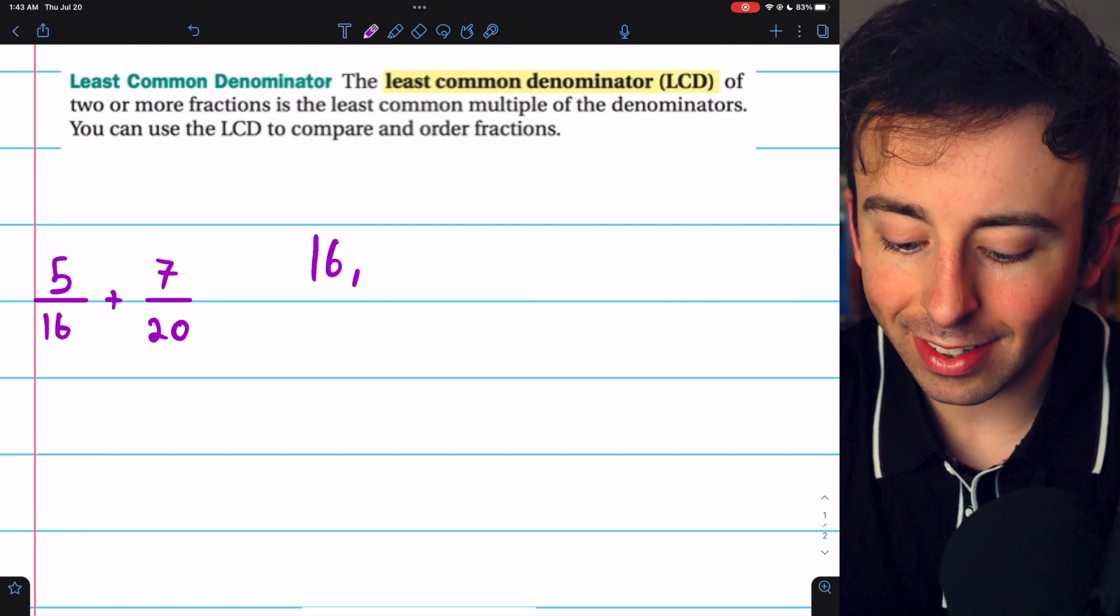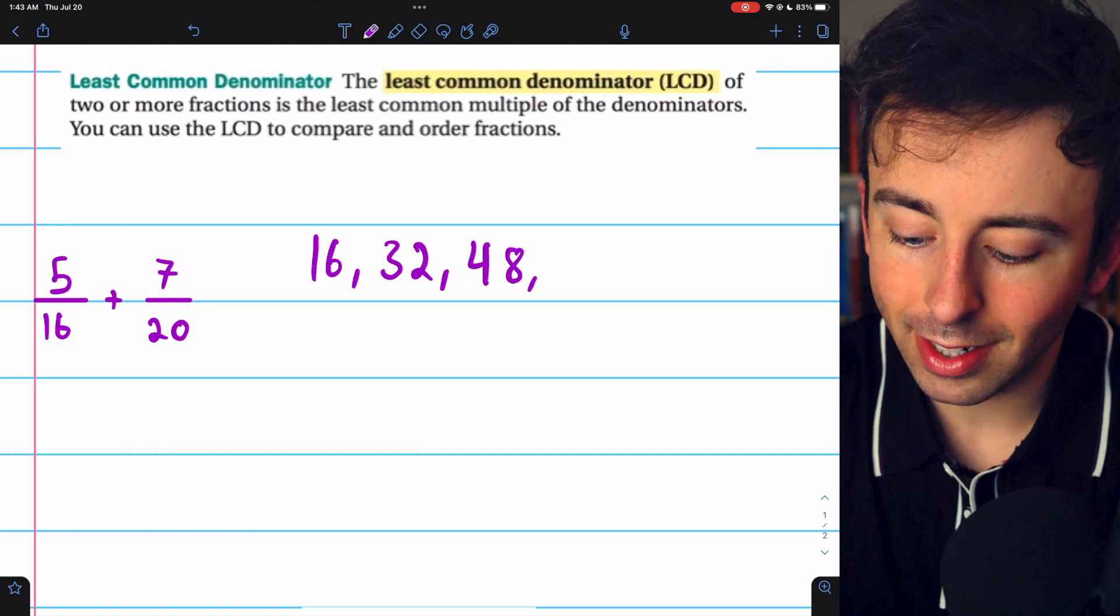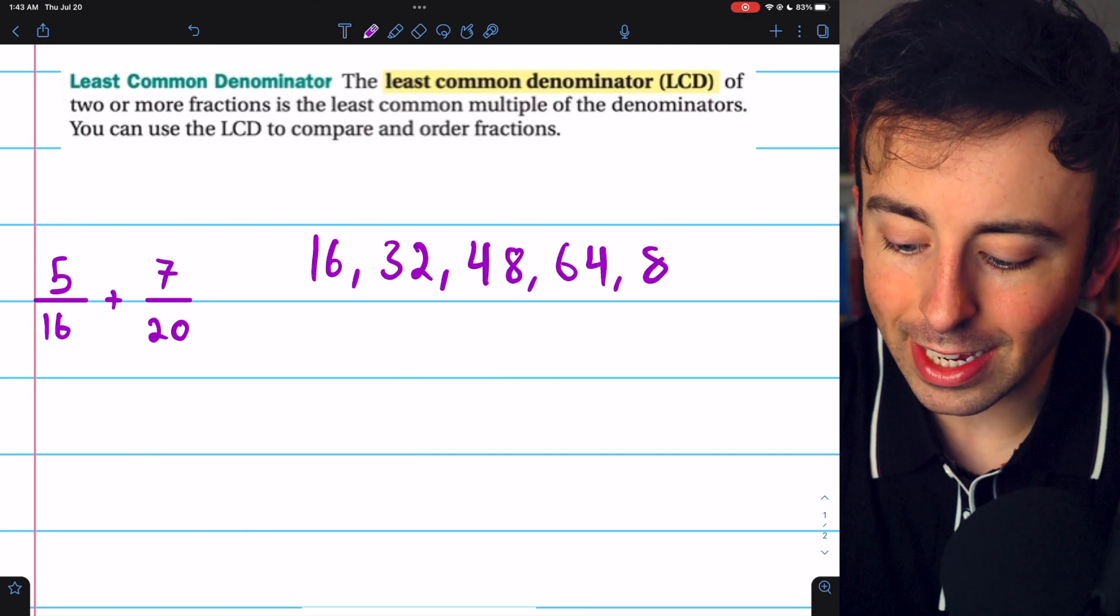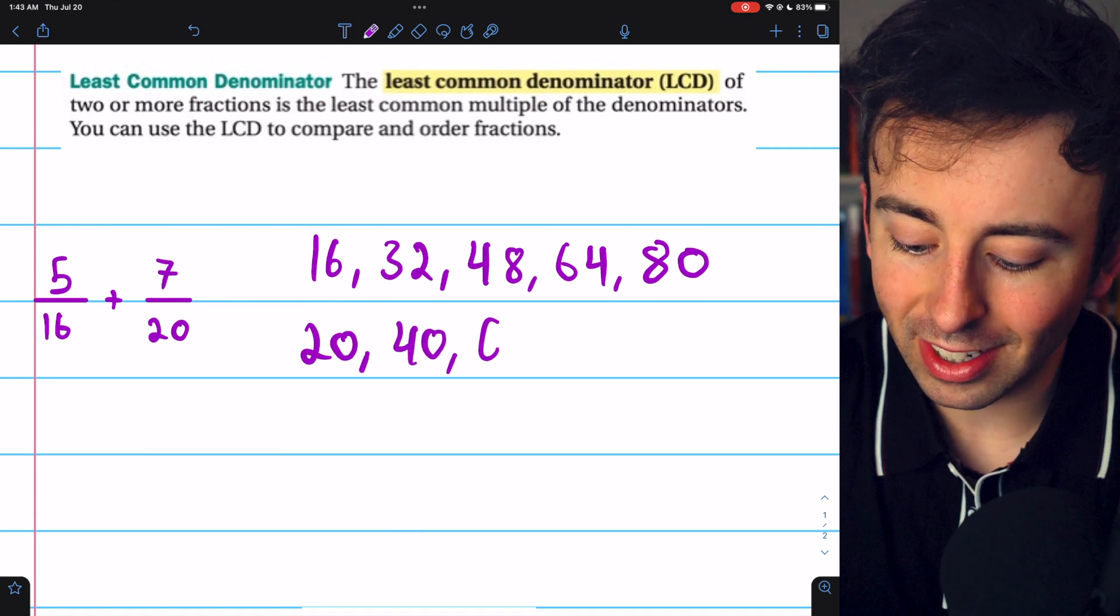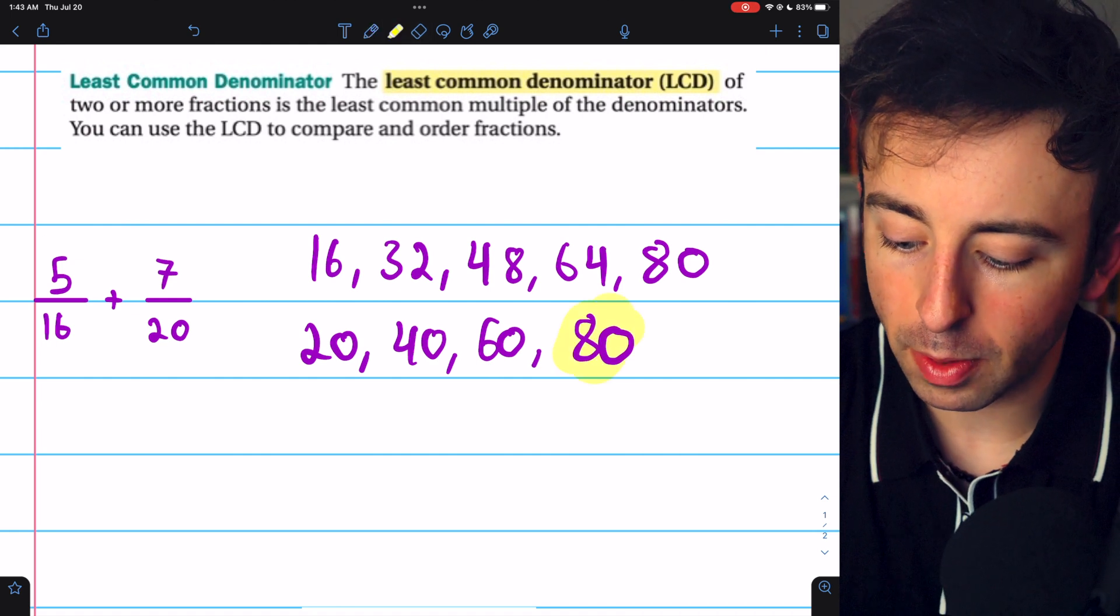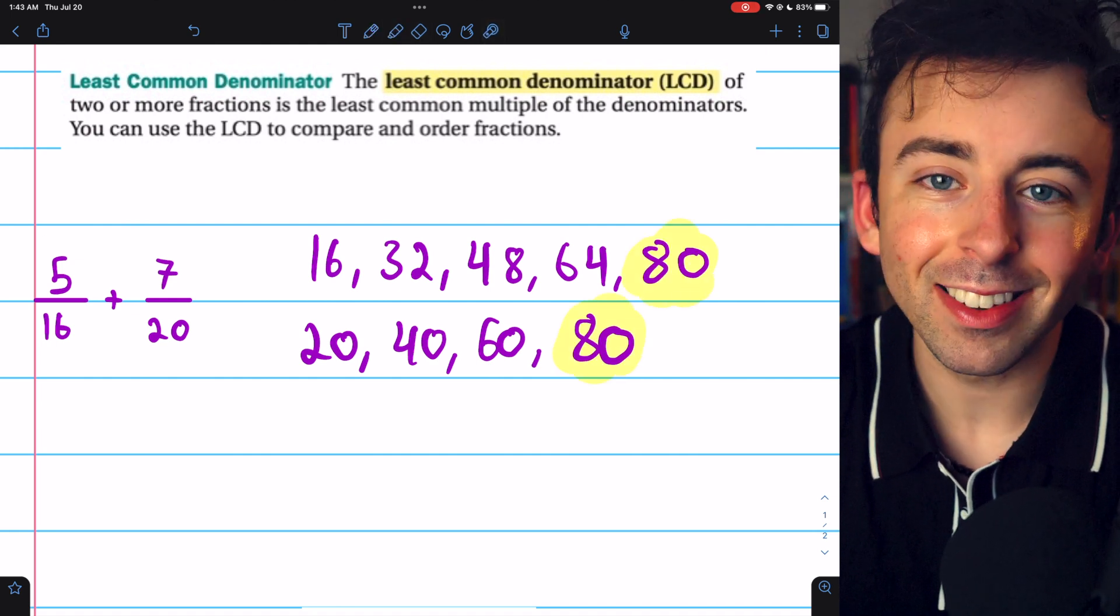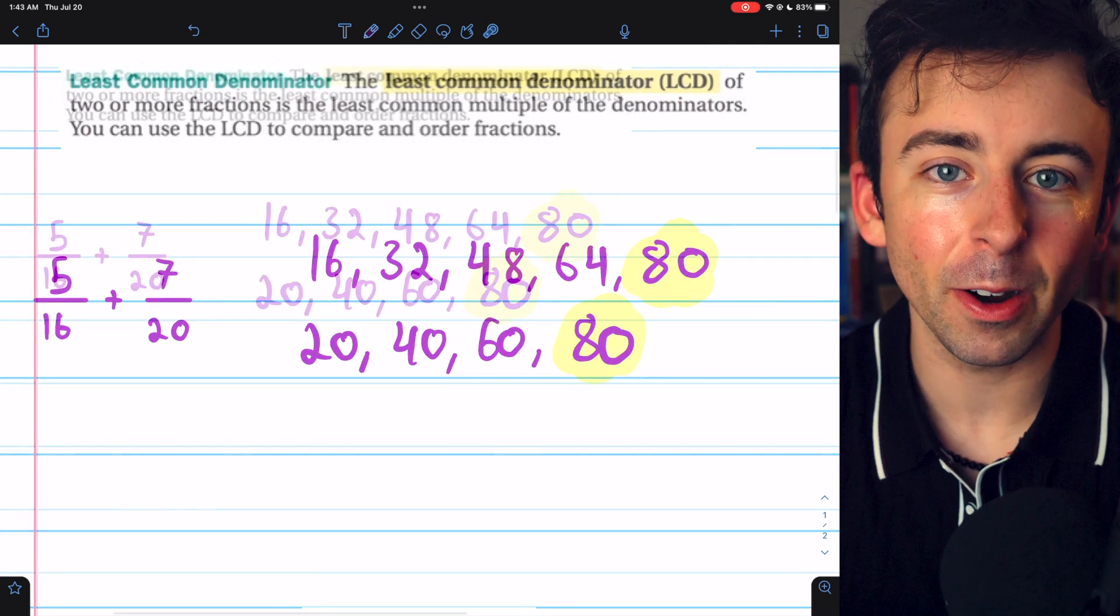Now, again, we could do this by listing out the multiples. 16, 32, 48, 64, 80, and then multiples of 20 are 20, 40, 60, 80. And then we would stop there and see that their least common multiple is 80. Again, the weakness of this strategy is you never know how long you might have to write these lists out.